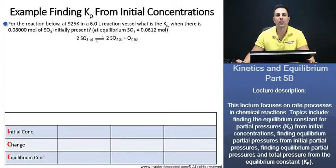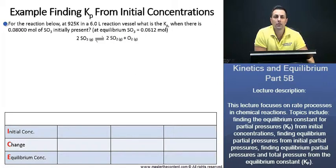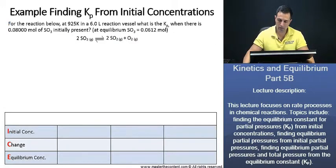To find the equilibrium constant for partial pressures, we can find it from the equilibrium constant for concentrations and relate it through the equation we just learned in the preceding lecture. To find our equilibrium constant for concentrations, we can do so from the equilibrium concentrations from our ICE chart. Let's get started with that.